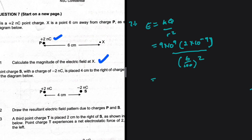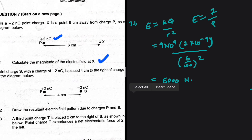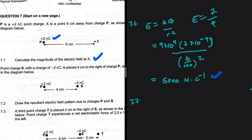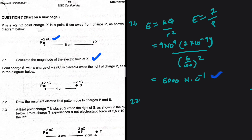I get 5000. The SI unit: we know that E equals F over q, so the SI unit is newtons per coulomb. That is the answer for 7.1.